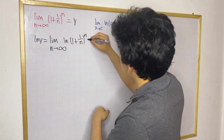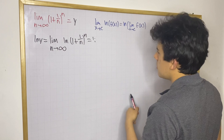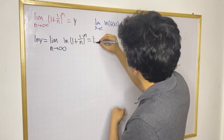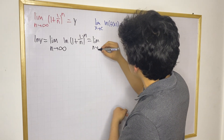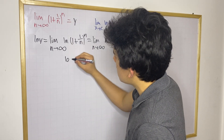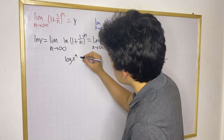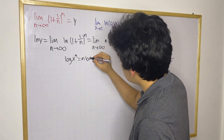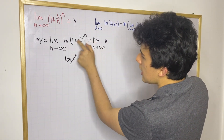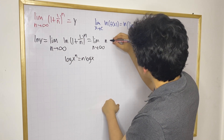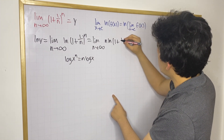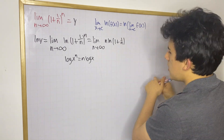Now you know that this would be equal to the limit as n approaches infinity of n times the natural log of (1 + 1/n), because there is a property of logs that says log(x^n) = n·log(x). So you can move the n to the front and you have n times the natural log of (1 + 1/n). This is the limit that you have.